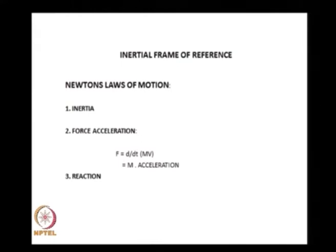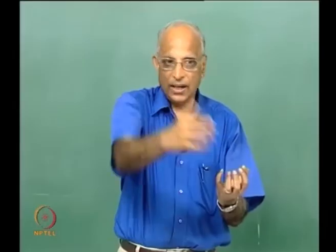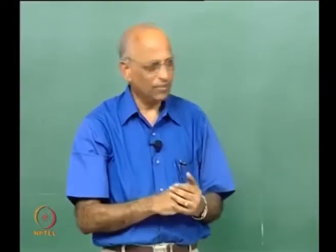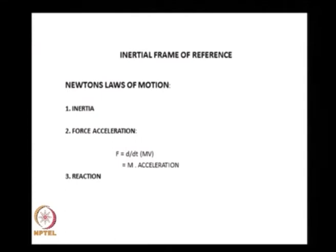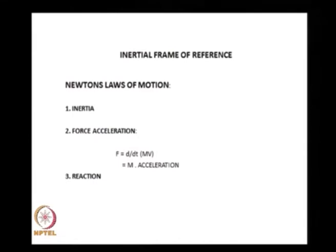Based on this inertial frame of reference, we talk in terms of Newton's laws of motion. First: inertia — a body continues to remain in a state of rest or uniform motion unless forced otherwise by an external force. Second: force equals rate of change of momentum, F = d(mv)/dt, which for constant mass gives F = ma. Third: action and reaction are equal and opposite. These laws are valid only if the frame of reference is inertial.